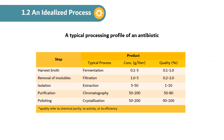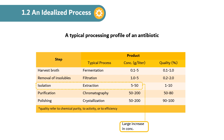This table shows a typical processing profile to produce an antibiotic, which comprises filtration for removal of insoluble, extraction for isolation of product, chromatography for purification, and crystallization for polishing. The data clearly shows that the biggest increase in concentration comes in the isolation step, but quality increases most dramatically during purification.